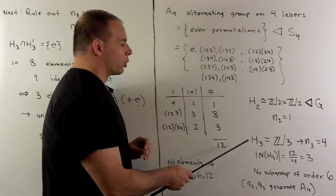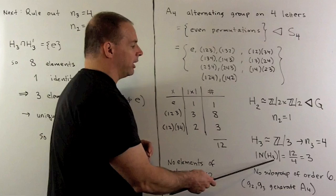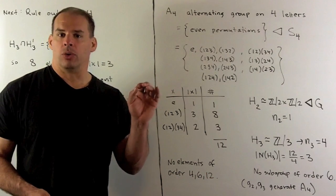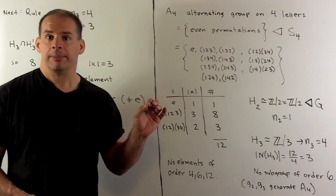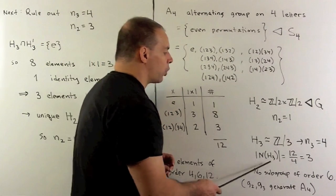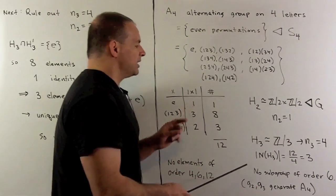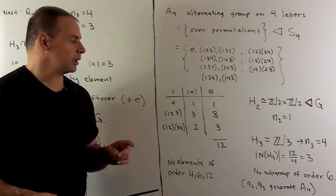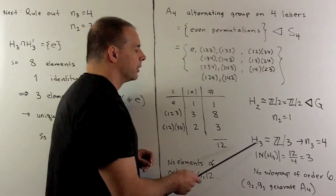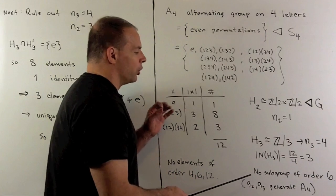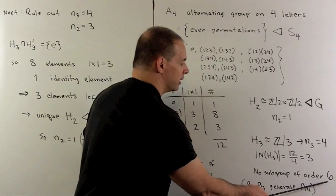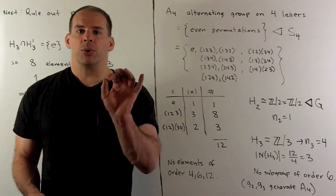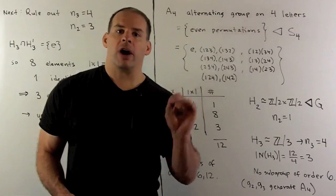If I want to compute the order of the normalizer of an H_3, our rule says n sub 3 is equal to the order of the group divided by the order of the normalizer of H_3. So the order of our normalizer is 3, which means H_3 is equal to its own normalizer. Finally, because H_3 equals its normalizer, there are no subgroups of order 6. So if I take an element of order 2 and an element of order 3, those two elements are going to generate all of A_4.